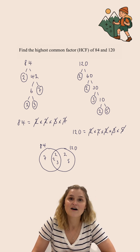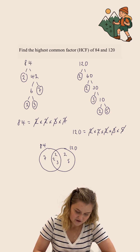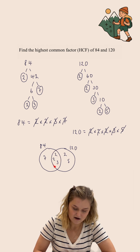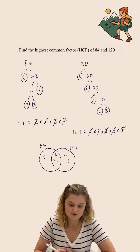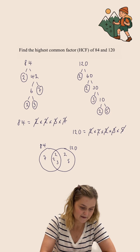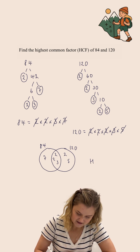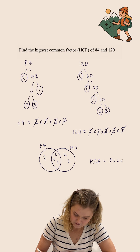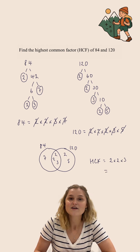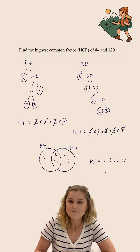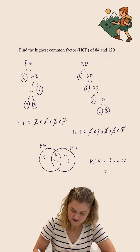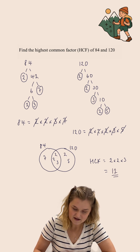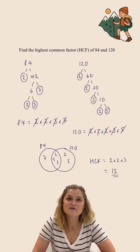Now we need to find the highest common factor. All we do is multiply the numbers in the intersection — the middle part, the crossover between 84 and 120. So the highest common factor, or HCF, is going to be 2 multiplied by 2 multiplied by 3. 2 multiplied by 2 is 4, multiplied by 3 is 12. So the highest common factor of 84 and 120 is 12.